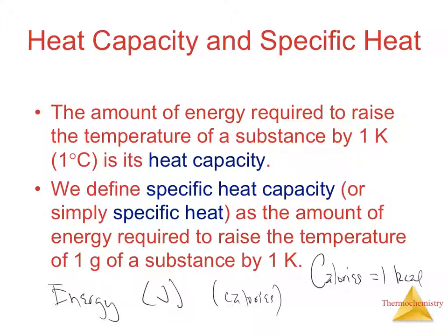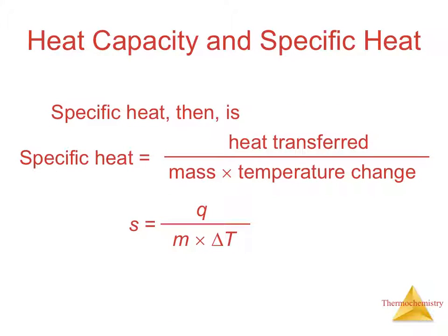There are two types of calorimetry. One is called a bomb calorimeter — which is not nearly as exciting as it sounds — and then there's one that is a constant pressure calorimeter. You can take the specific heat mathematically — the heat transferred is Q — and the equation is: specific heat (S) equals Q divided by mass times temperature change (ΔT). Cross-multiplying gives you S × m × ΔT = Q.